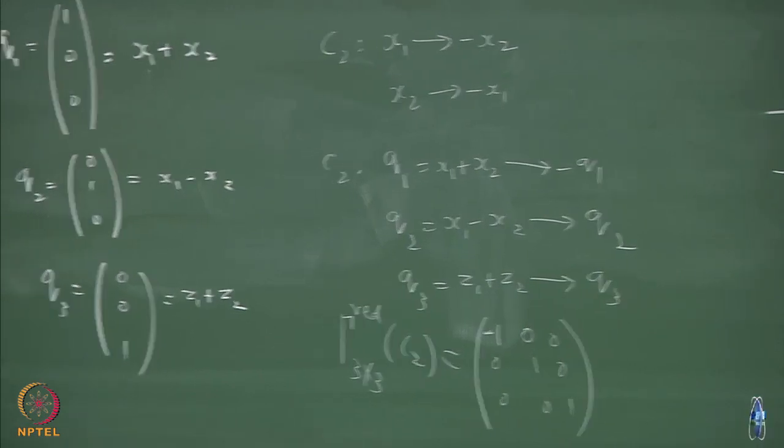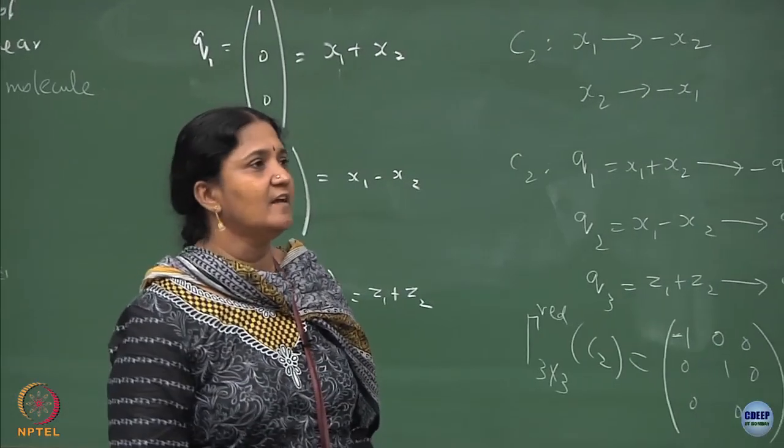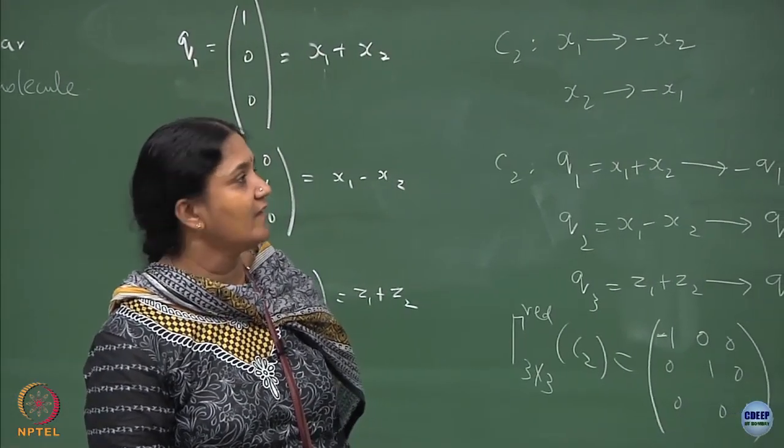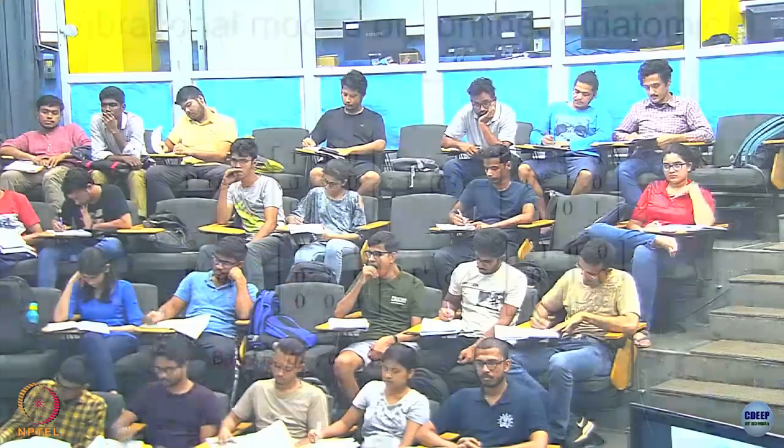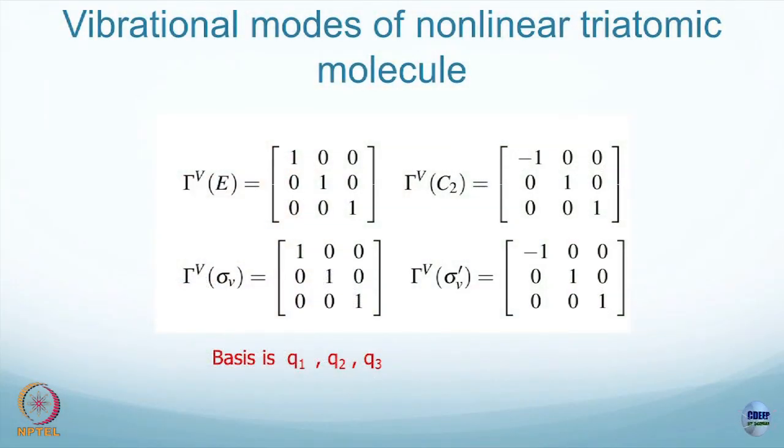Write out for the sigma v, treated to be the xz plane. Sigma v is also like the identity matrix as I shown in the screen. So, identity element is this, C2 element is this which I worked it out elaborately now. Sigma v is the xz plane - xz plane you will not change x or z coordinate.